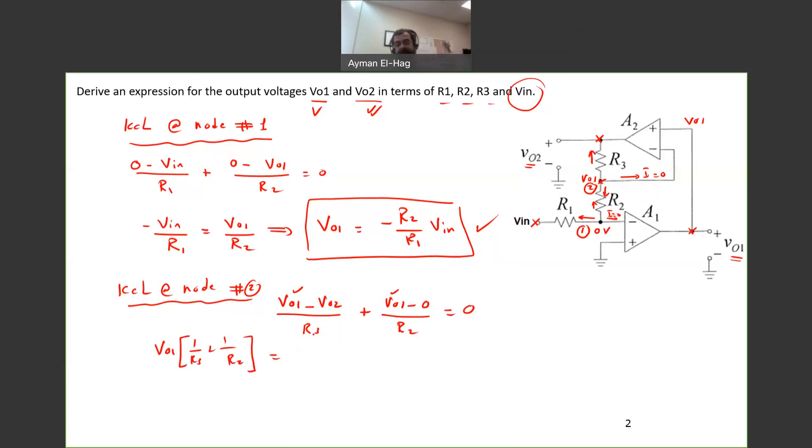Take the VO2 to the other side of the equation. So it's VO2 divided by R3. Multiply everything by R3. So we'll have VO2 is equal to 1 plus R3 over R2 times VO1.